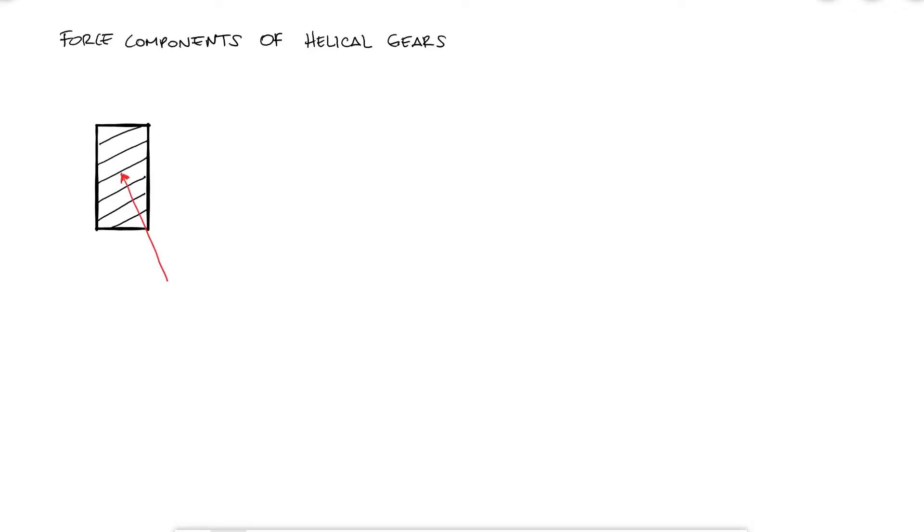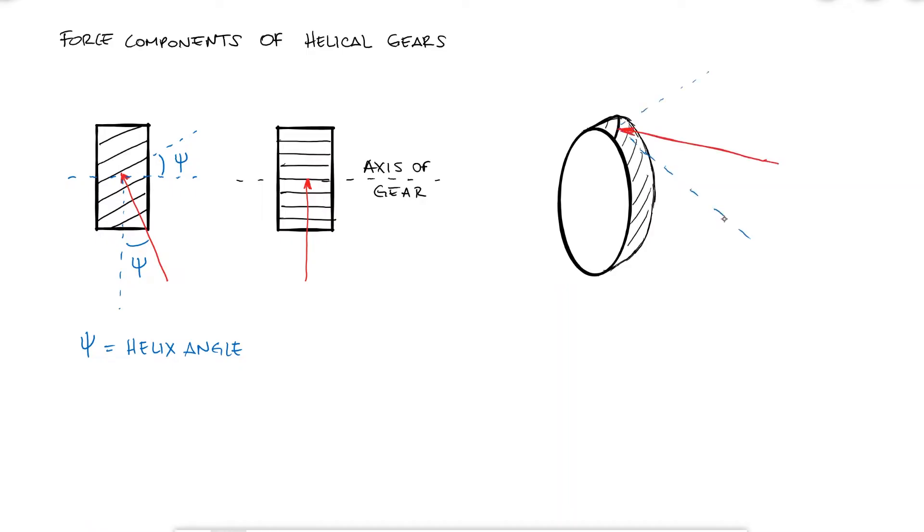For this reason, we know that the force will not be perpendicular to the axis of the gear, like it is in spur gears, but it will be oriented at an angle psi, the helix angle I mentioned during the last video, and because of the profile or shape of the teeth, the pressure angle phi will still be there. For these reasons, the force will have three components.